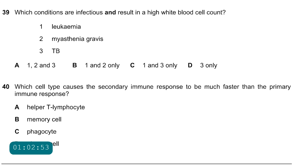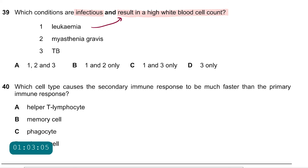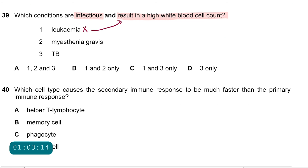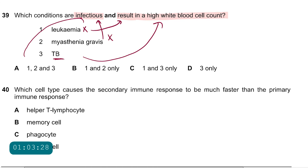Question 39: which conditions are infectious and result in a high white blood cell count? Leukemia results in high white blood cell count due to uncontrolled stem cell division, but it is not infectious — incorrect. Myasthenia gravis is not infectious — incorrect. Tuberculosis is infectious and results in a high white blood cell count due to clonal selection and clonal expansion. The only correct answer is D.